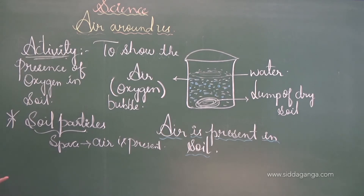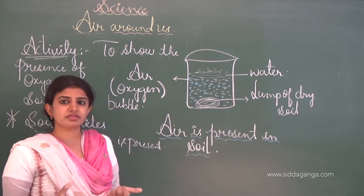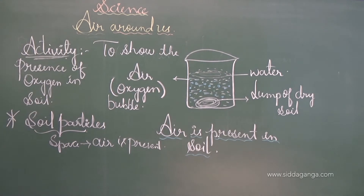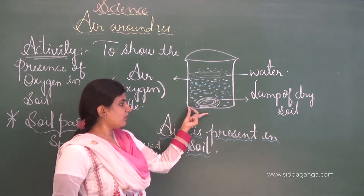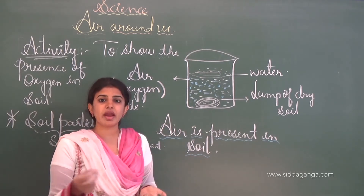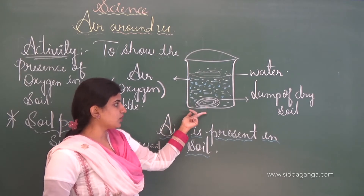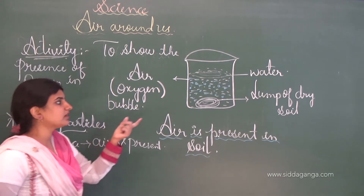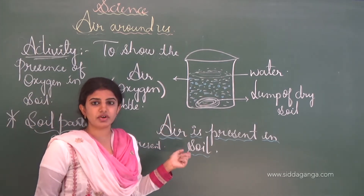These bubbles are nothing but air bubbles, showing that the soil contains oxygen. For this activity, first take a lump of soil in a beaker or container, then slowly add water. After adding water to the dry soil, you will see bubbles form — these bubbles confirm that air is present in the soil.